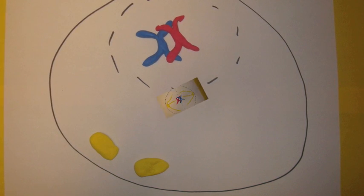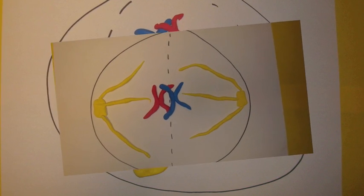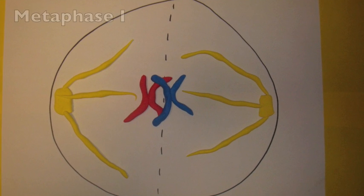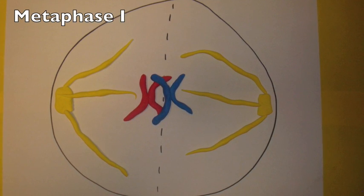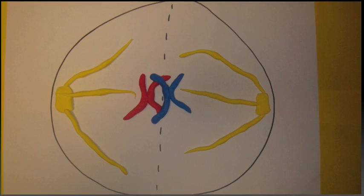During metaphase, tetrads line up at the equatorial line. The spindle has completely formed. It is during prophase I and metaphase I that genetic recombination, or crossing over, magically occurs.